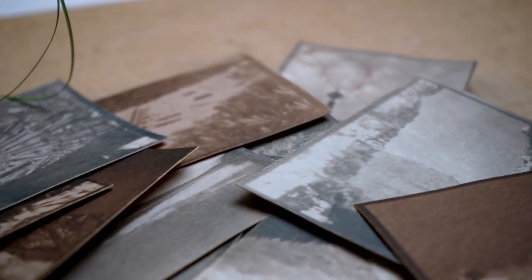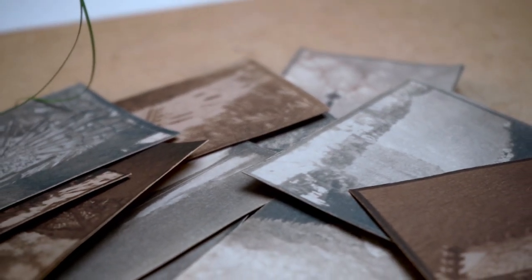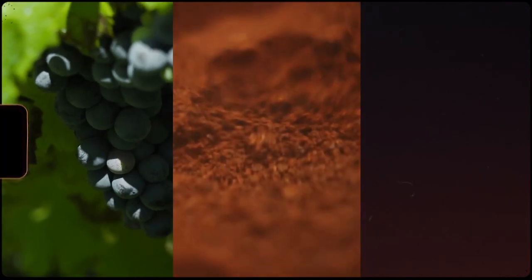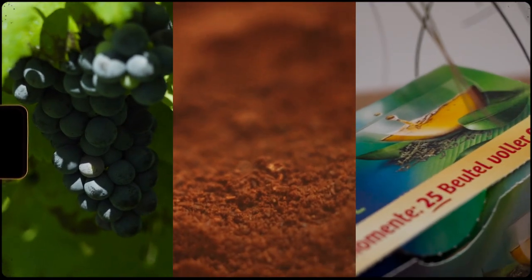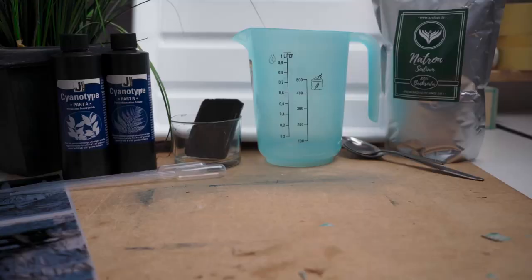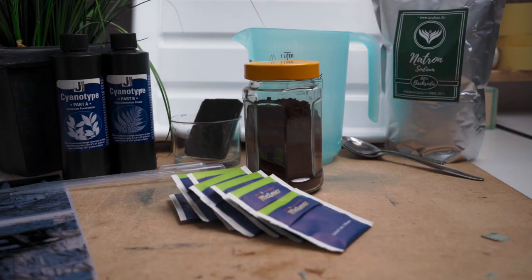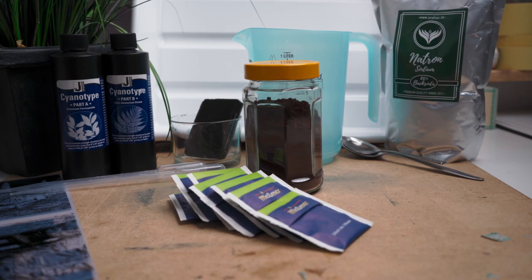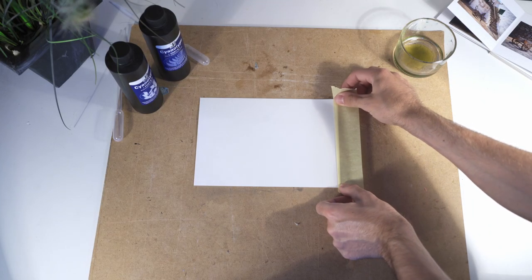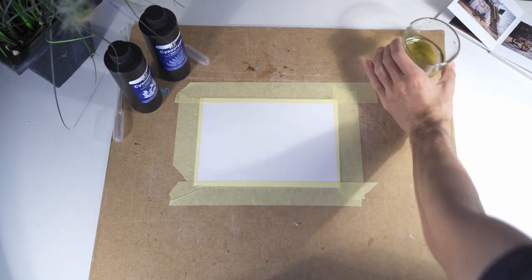Now when it comes to toning you have several different options. You could use wine or coffee or tea or any other tannin containing fluid. Today I'm going to use coffee and tea as those are the ingredients I had most success with before. To show you the whole process I'm going to create a toned cyanotype print from scratch.